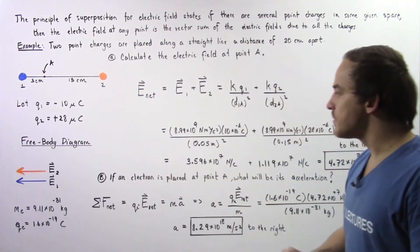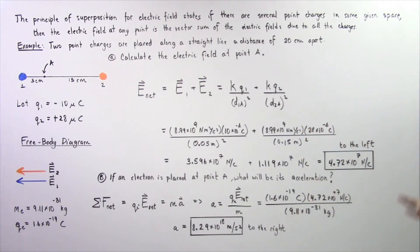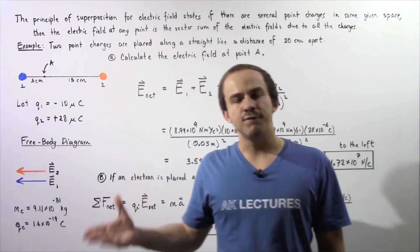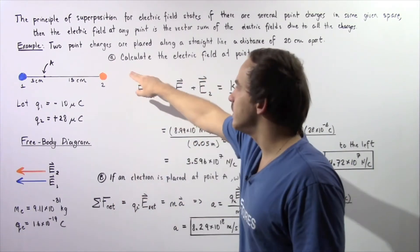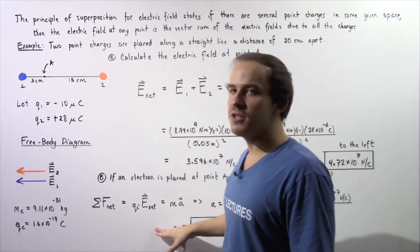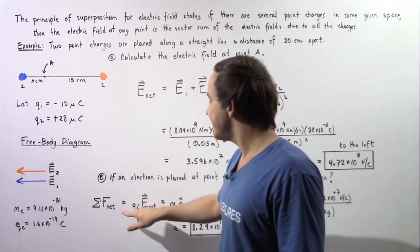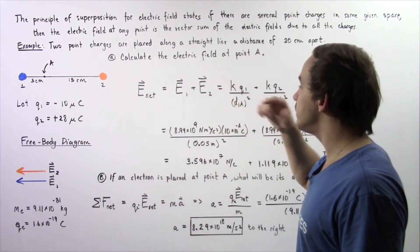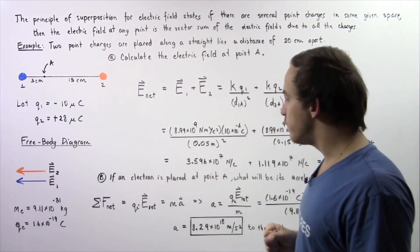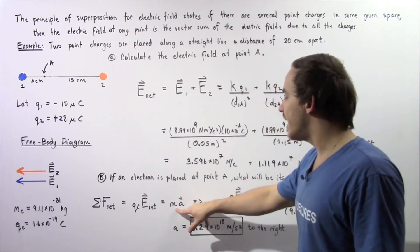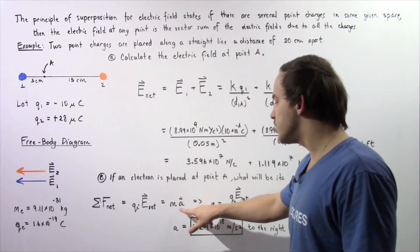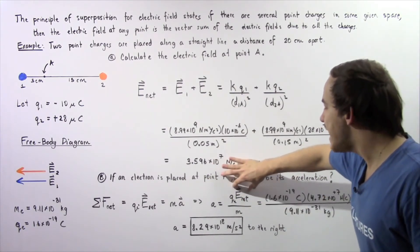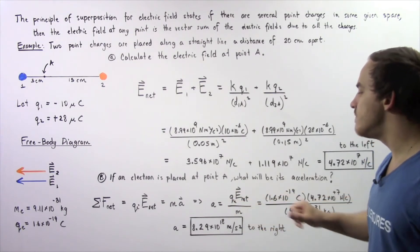Moving on to part B: if an electron is placed at point A, what will be its acceleration? The electron will feel a force due to the net electric field from part A. Using F = QE and Newton's second law F = ma, we solve for acceleration: a equals the charge of the electron times the net electric field divided by the mass of the electron. The electron mass is 9.11 times 10 to the negative 31 kilograms, and the electron charge is 1.6 times 10 to the negative 19 coulombs.